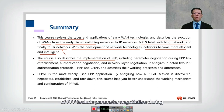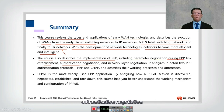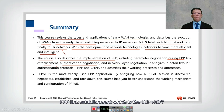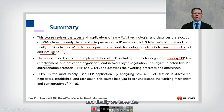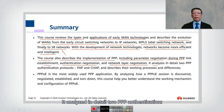The course also described the implementation of PPP, including parameter negotiation during PPP link establishment: LCP for link establishment, authentication negotiation supporting PAP and CHAP, and network layer negotiation via IPCP. Authentication is an optional configuration. The course analyzed PPP authentication — PAP and CHAP — in detail, describing their working processes and differences.